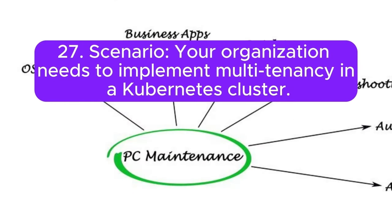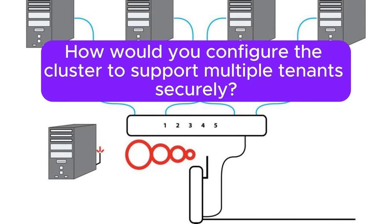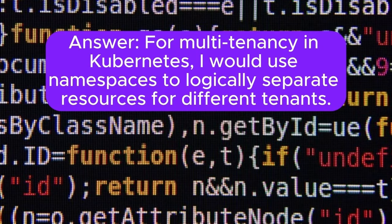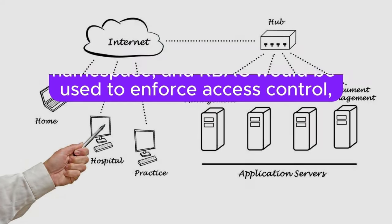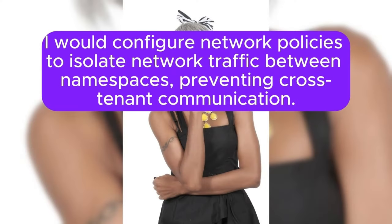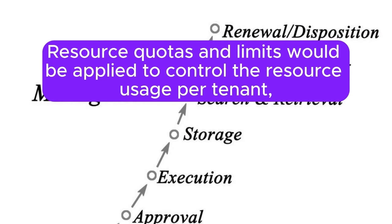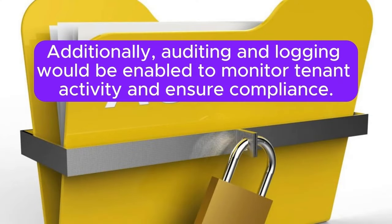Scenario 27: Your organization needs to implement multi-tenancy in a Kubernetes cluster. How would you configure the cluster to support multiple tenants securely? Answer: For multi-tenancy in Kubernetes, I would use namespaces to logically separate resources for different tenants. Each tenant would have its own namespace, and RBAC would be used to enforce access control, ensuring tenants can only access resources within their namespace. I would configure network policies to isolate network traffic between namespaces, preventing cross-tenant communication. Resource quotas and limits would be applied to control resource usage per tenant, preventing any single tenant from consuming disproportionate resources. Auditing and logging would be enabled to monitor tenant activity.